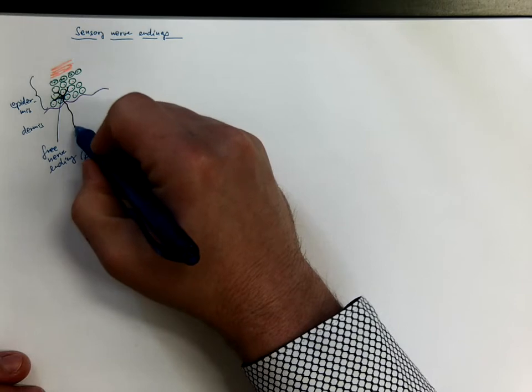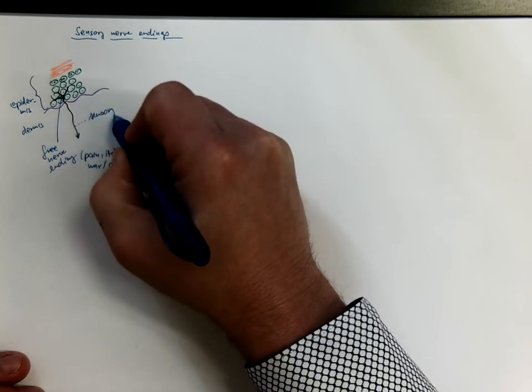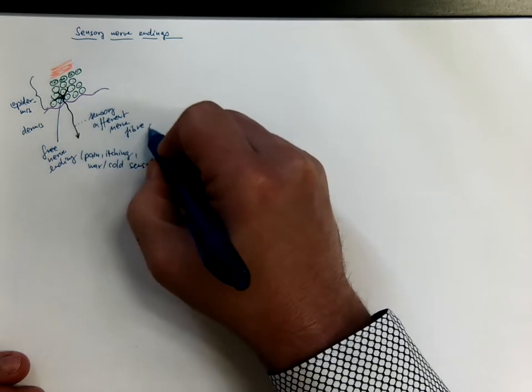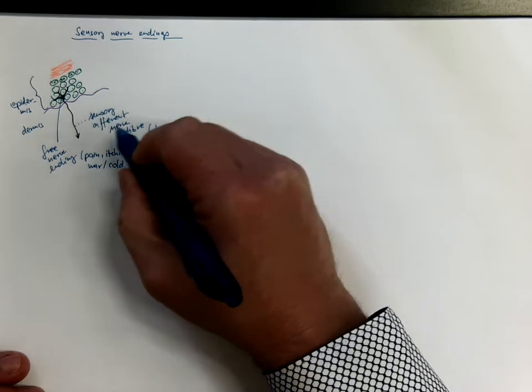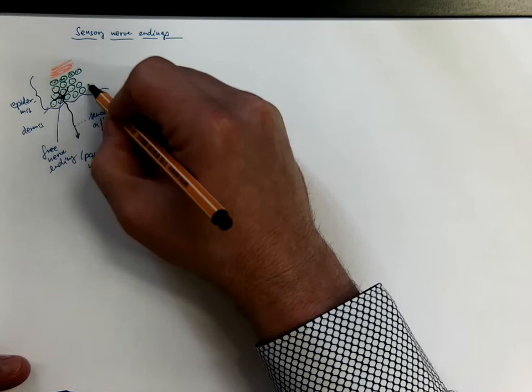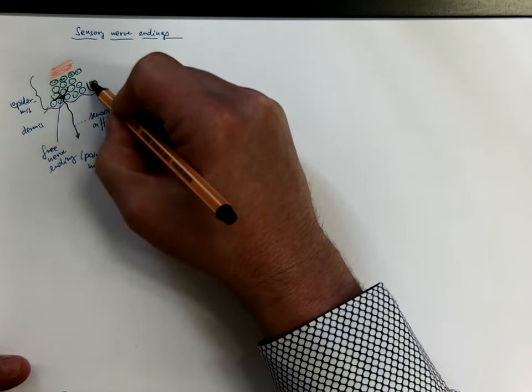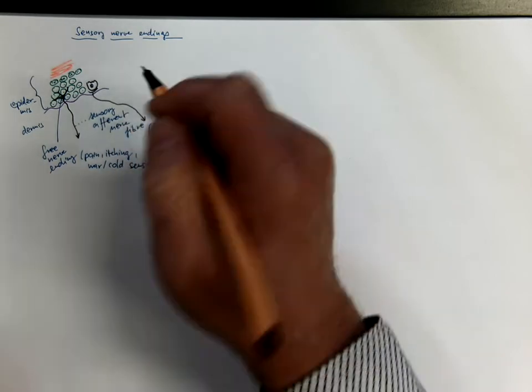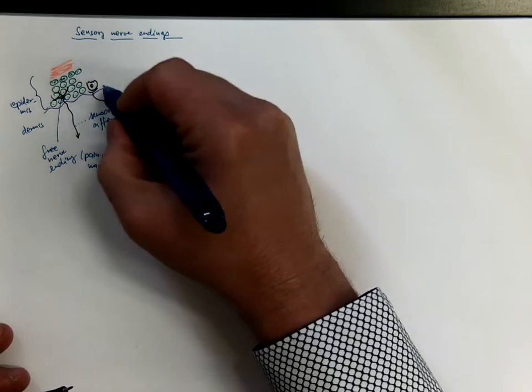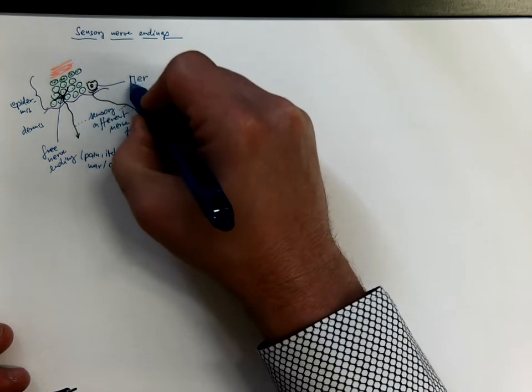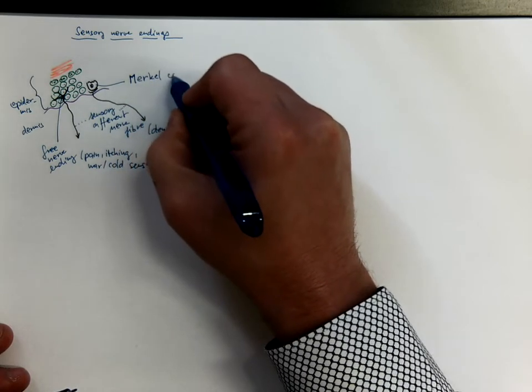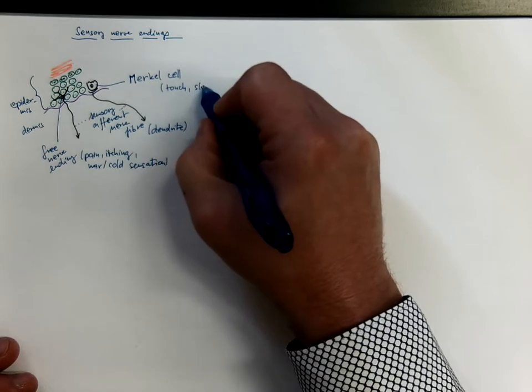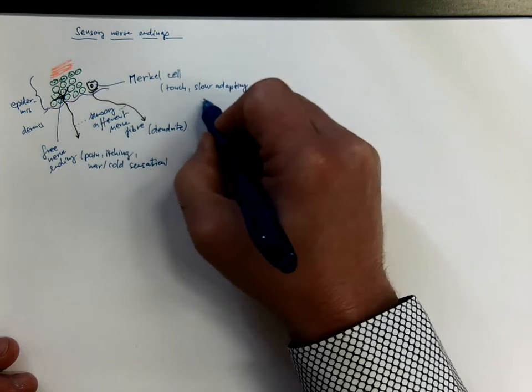This would be the sensory afferent nerve fiber. So actually a dendrite of a sensory neuron. Other examples are the Merkel cells. They are on the interface between epidermis and dermis and they are surrounded by another sensory nerve fiber. This is a Merkel cell, responsible for feeling touch. And these are slow adapting receptors.